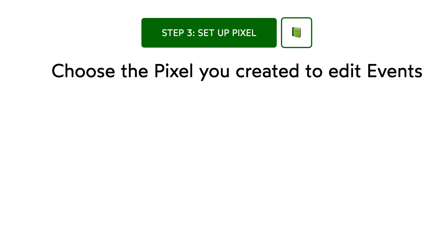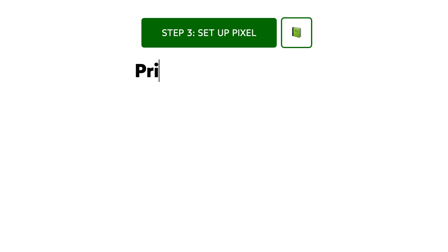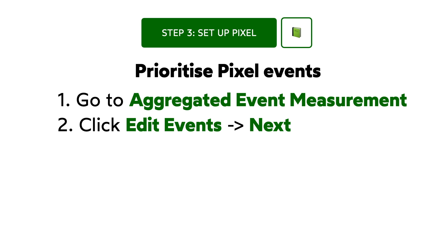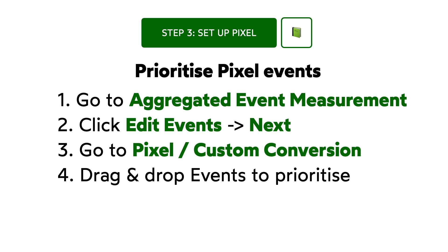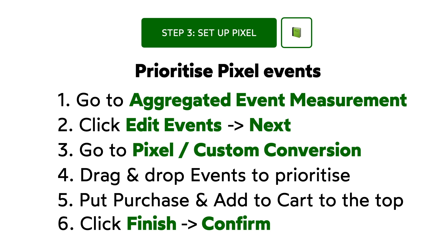To prioritize the events, go to Events Manager and click the pixel you want to use. Under Aggregated Event Measurement, select Edit Events. Read through the introduction screens and click Next, then click Edit Events. Keep in mind you can only configure 8 conversion events at most. Select your pixel or custom conversion, choose the event you want to configure under Event Name, and drag and drop your events from highest priority at the top to lowest at the bottom. Put Purchase Event as the highest priority, Add to Cart as the second, and View Content as the third. Once done, click Finish, then Confirm.